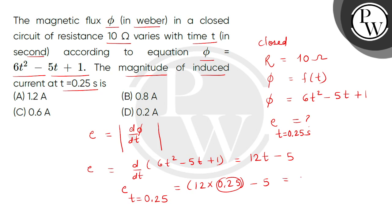अब 0.25 पर हम क्या लिख सकते हैं 1 by 4. So बच्चों, यहाँ आएगा हमारे पास में 3 minus 5. But हमें इसका क्या लेना है? Magnitude. तो यहाँ आएगा हमारे पास में 2 volts.